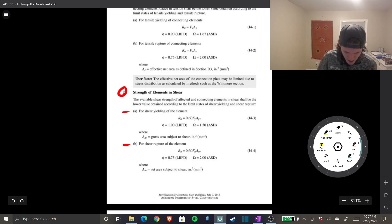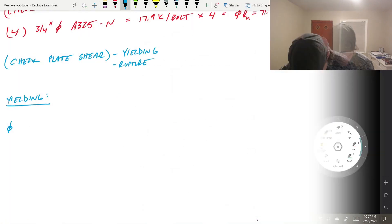The equation is Rn equals 0.6 Fy Agv. Agv is your gross area and phi for this case is just 1.0, omega if you were doing ASD is 1.5, it's all given right there. We have no unknowns so let's head back and plug it all in and solve it.